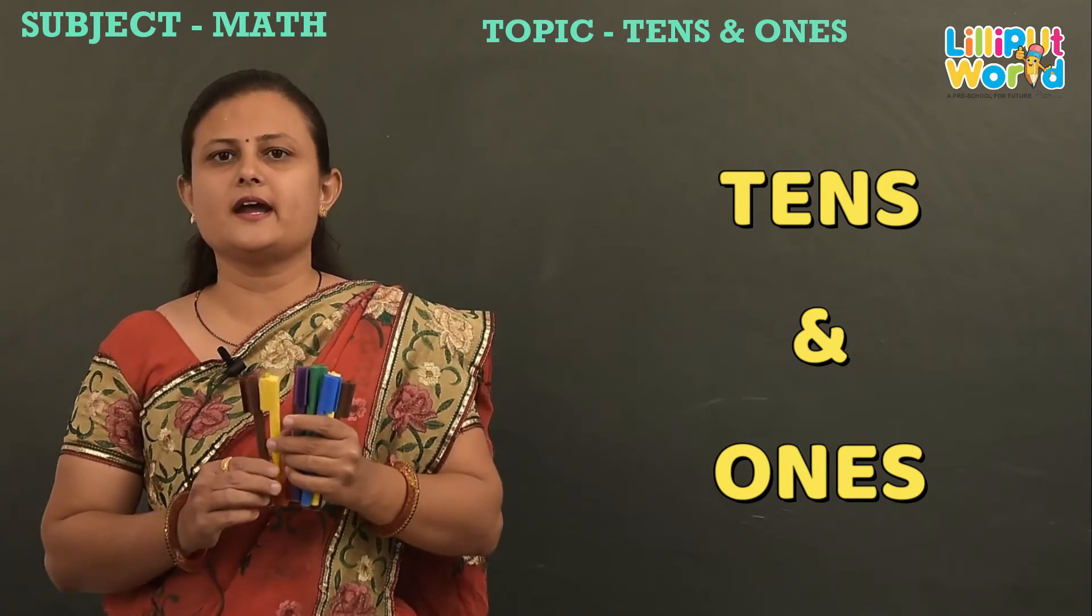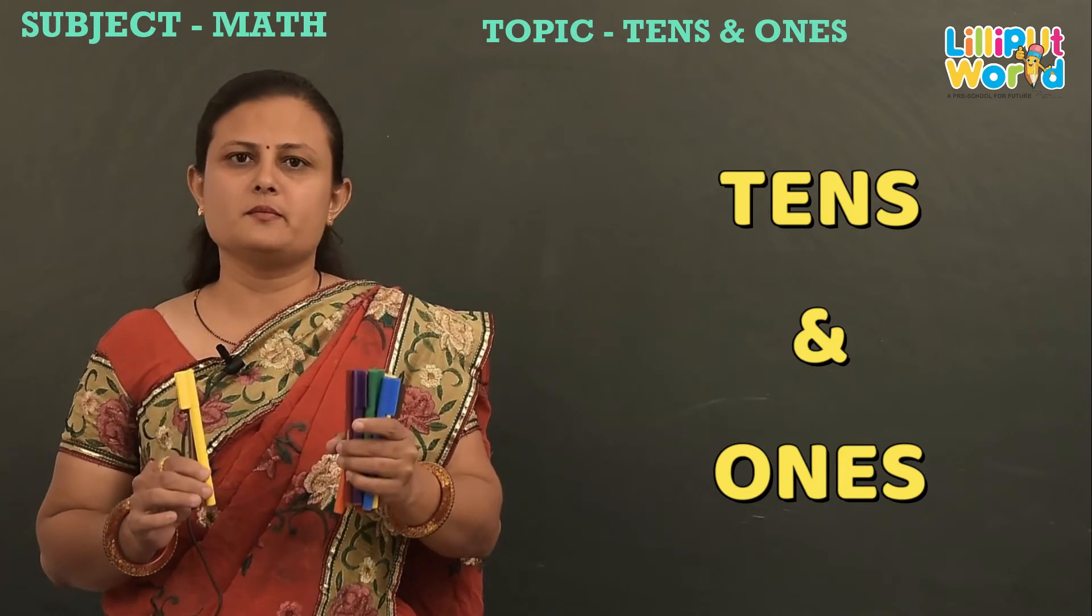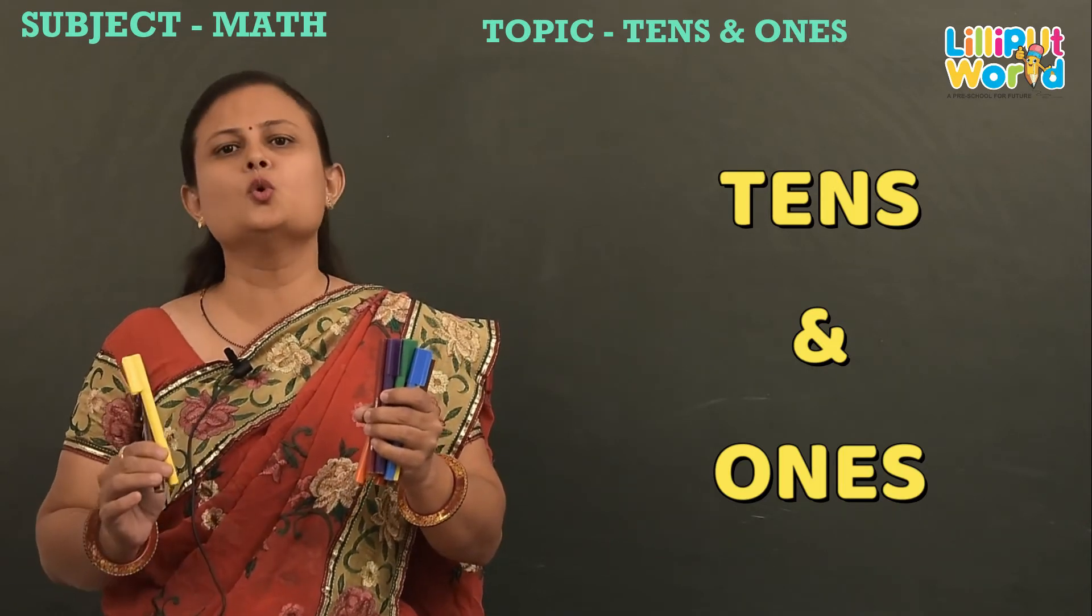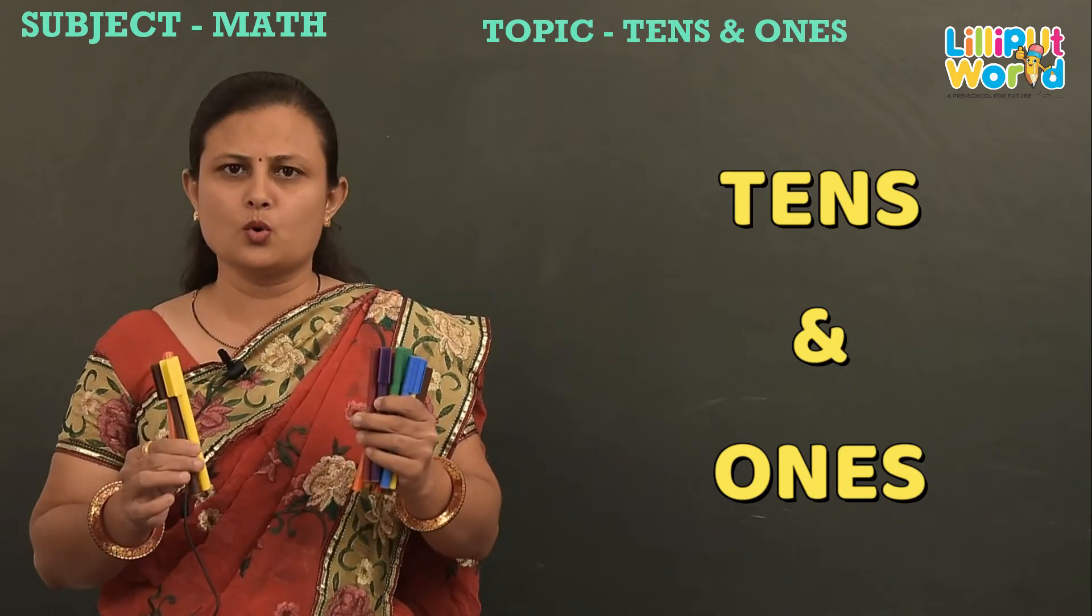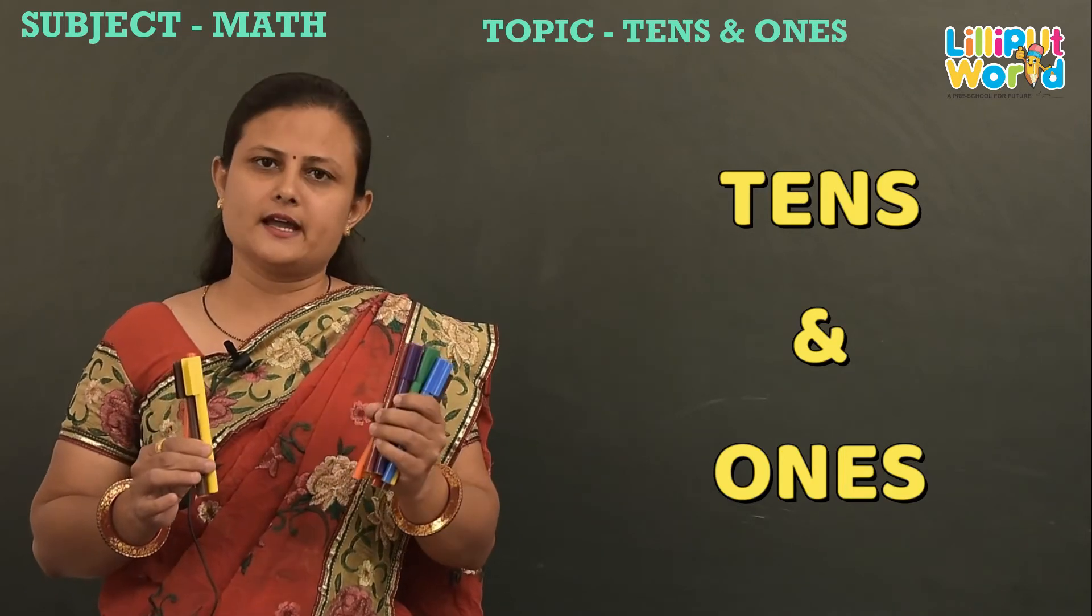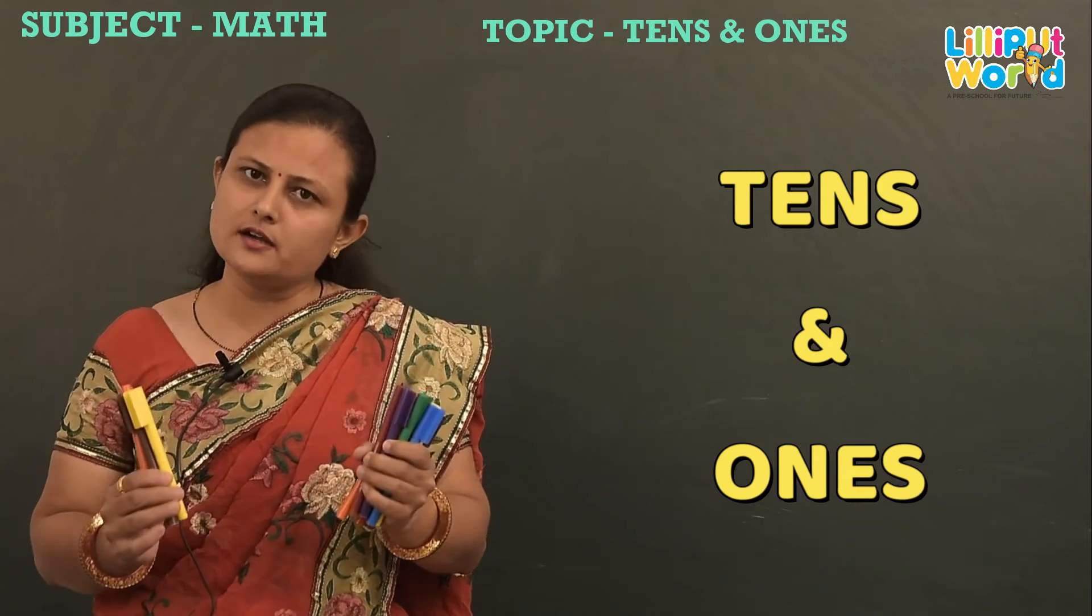Now if you add one more, it makes ten and two, twelve. Now you add one more, it calls ten and three, thirteen.